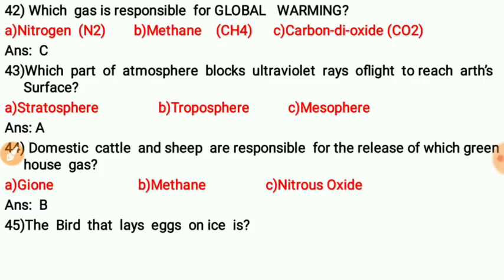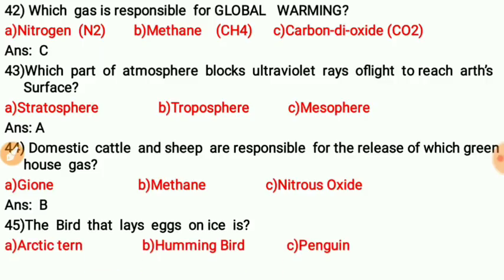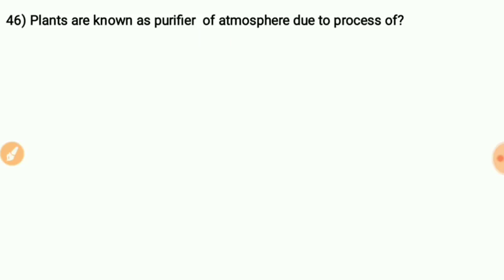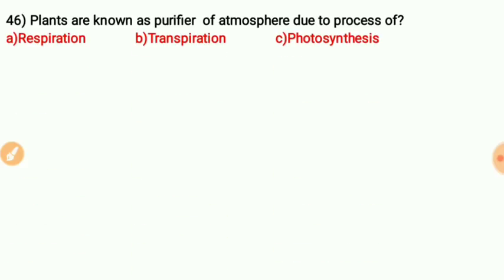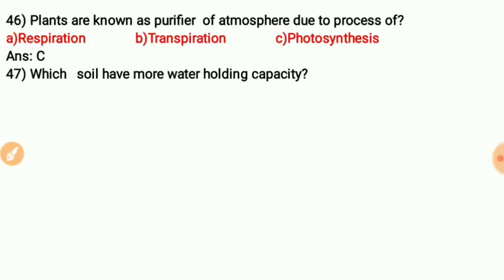Question forty-three: The bird that lays eggs on ice is — the answer is penguin. Question forty-four: Plants are known as purifiers of the atmosphere due to the process of — photosynthesis. Due to photosynthesis, plants are called purifiers of the atmosphere.